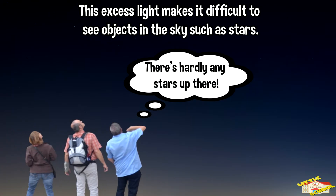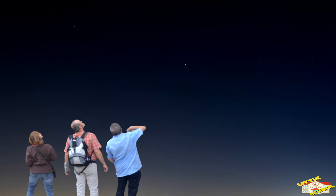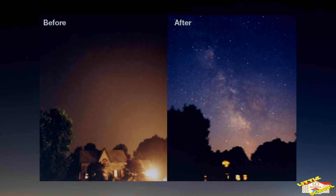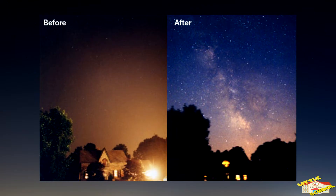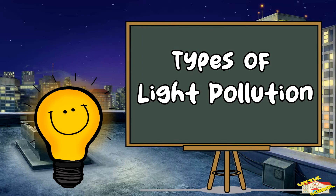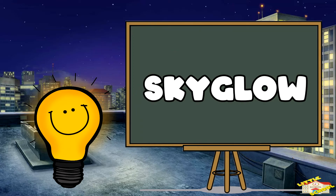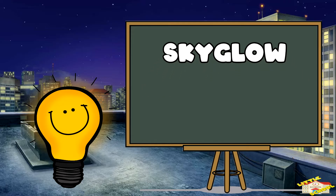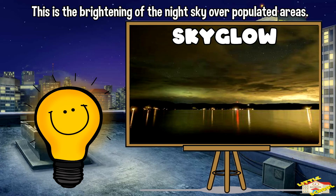This excess light makes it difficult to see objects in the sky, such as stars. To the left, it shows us how much light pollution affects how we see stars in the night sky. On the right, it shows us that with no light pollution we can see the stars clearly. There are a few types of light pollution.